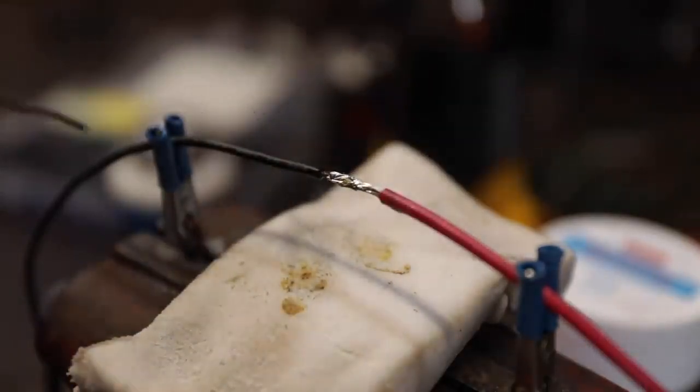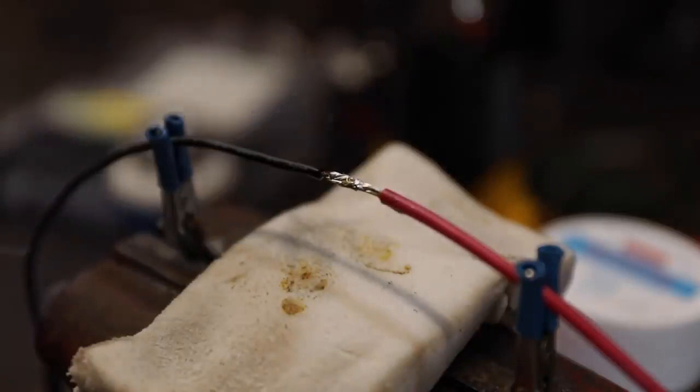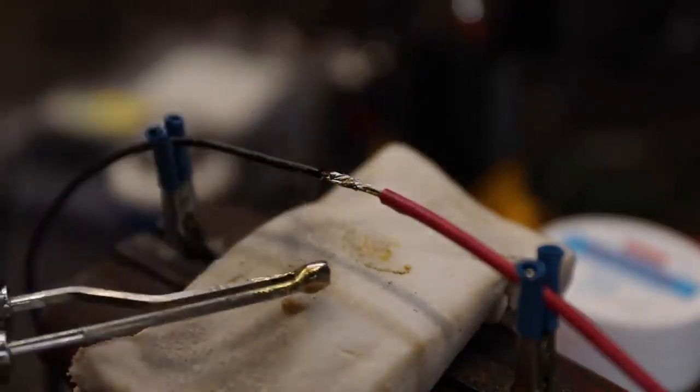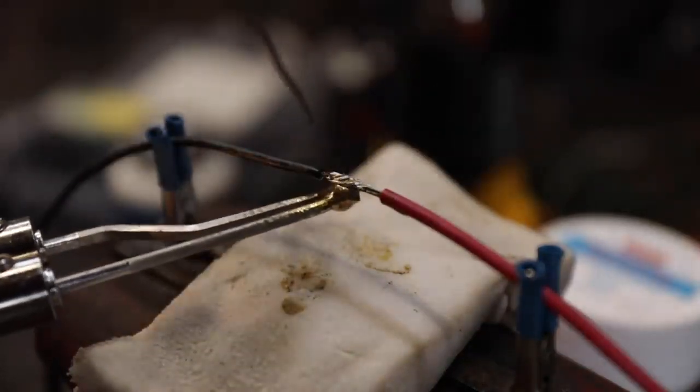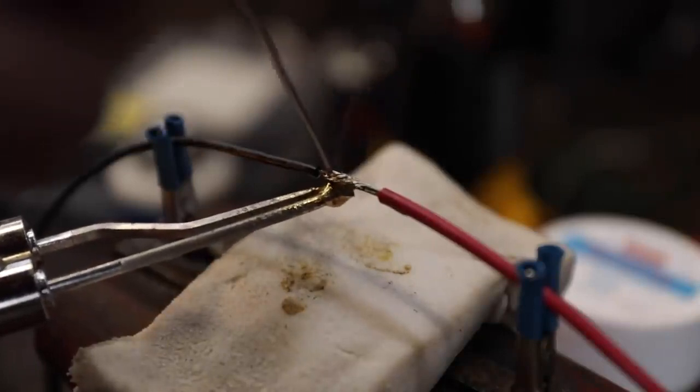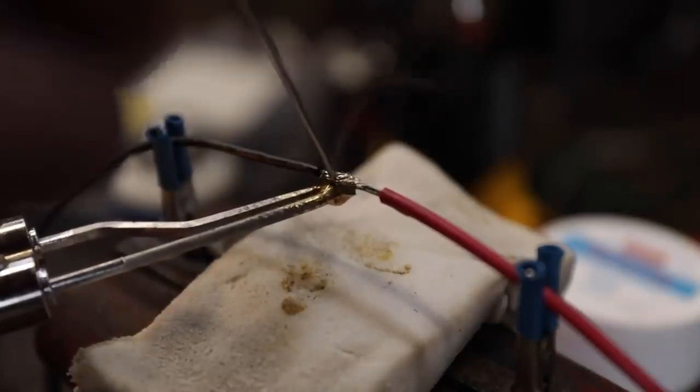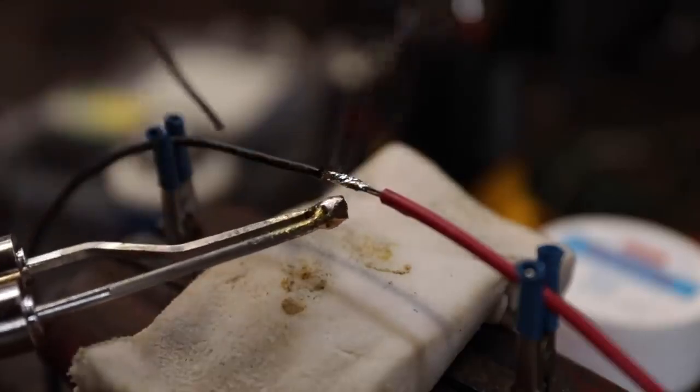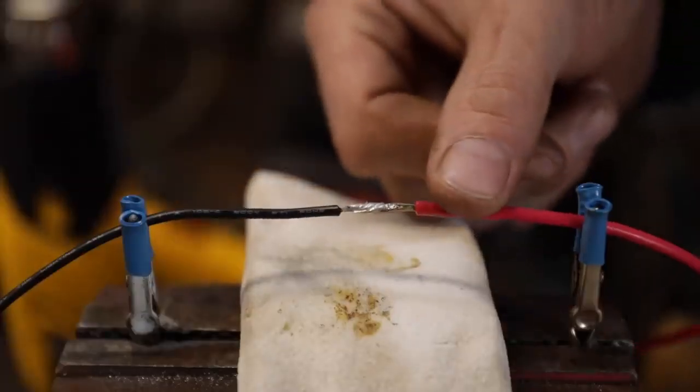Don't put so much on there that it's going to drip off. Don't try to dribble it on there. I could probably use a little bit more right there. There we go, that's all. That solder joint looks pretty good. Now remember, this is marginal advice, so take it for what it's worth.